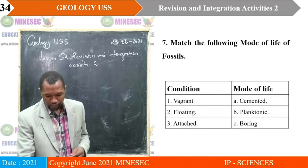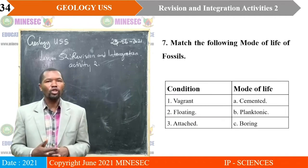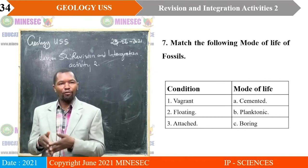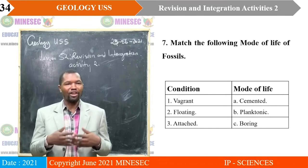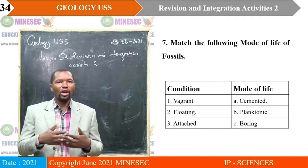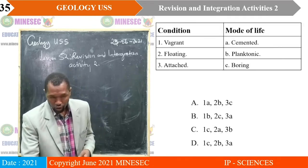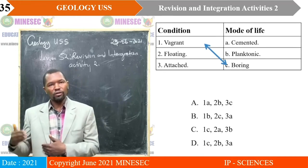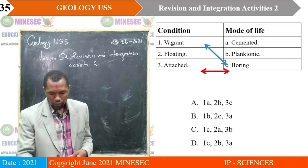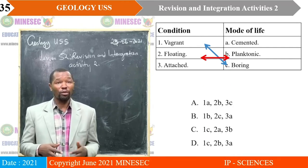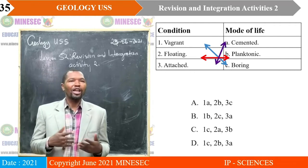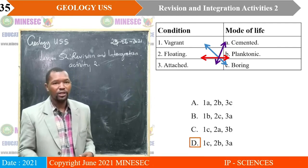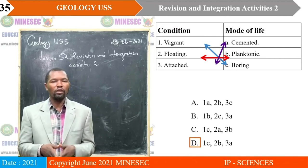Question seven: match the following mode of life of fossils — conditions: vagrant, floating, attached, cemented, planktonic, boring. Match one: vagrant goes with boring mode of life; floating goes with planktonic mode of life; attached goes with cemented mode of life. Correct answer is D: 1C, 2B, 3A.